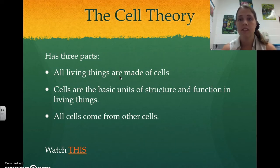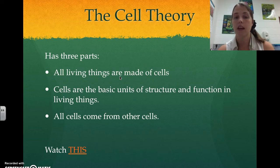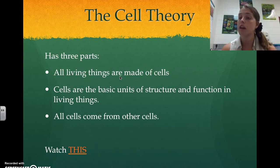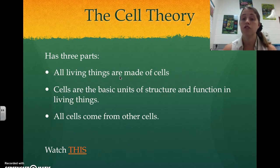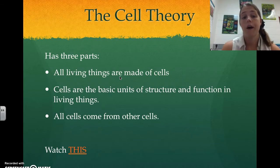The cell theory has three parts. First, all living things are made of cells — every single thing that's living. If you remember the seven characteristics of living things, one of them is that it is made of cells. Second, cells are the basic units of structure and function in living things — the smallest unit of life that can perform all seven characteristics. And third, all cells come from other cells, meaning if you have a cell, it came from a cell.